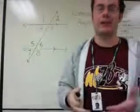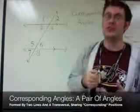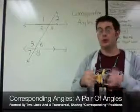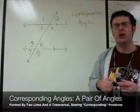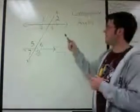Corresponding angles are a pair of angles that are formed by two lines and a transversal, and they share similar or corresponding positions with each other. What do I mean by that? Let's take a look at my picture here.